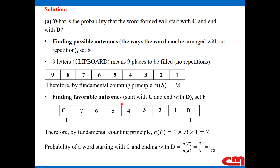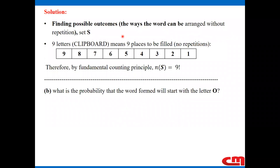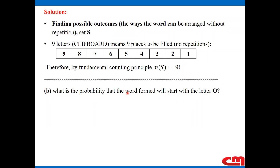Let us now go on to B. I've carried forward the information from A — that is, the number of possible outcomes, set S, is still nine factorial. For part B: what is the probability that the word formed will start with the letter O? So we now have to find our favorable outcome.